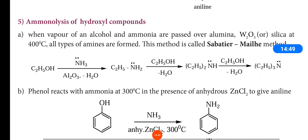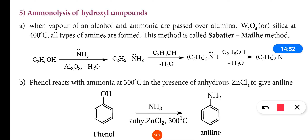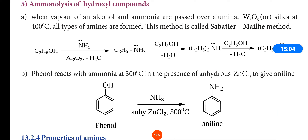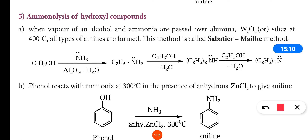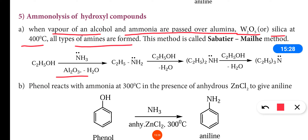Next is the preparation of amines by ammonolysis of hydroxyl compounds such as alcohols and phenols. When vapors of alcohol and ammonia are passed over alumina (Al2O3), tungsten pentoxide, or silica at 400 degrees Celsius, all types of amines — primary, secondary, and tertiary — are formed.